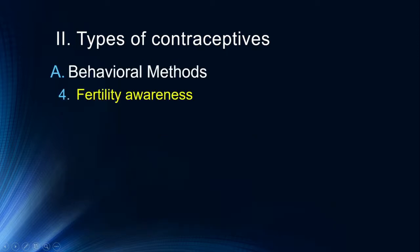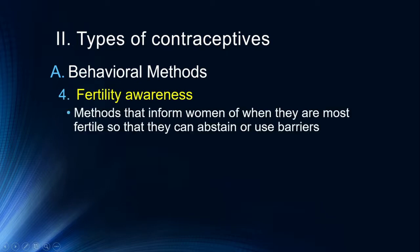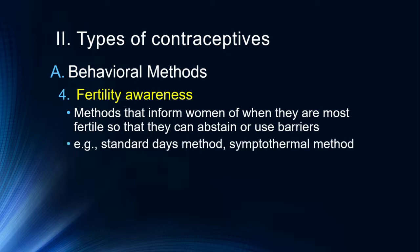Fertility awareness has evolved in the modern era. These are methods that inform women of when they are most fertile so they can abstain or use barriers. Temperature fluctuates across the menstrual cycle. There are a couple of different ways to do this: the standard days method, which is counting days from the last menstrual cycle, and the symptom-thermal method, which is tracking the body's temperature across the menstrual cycle.